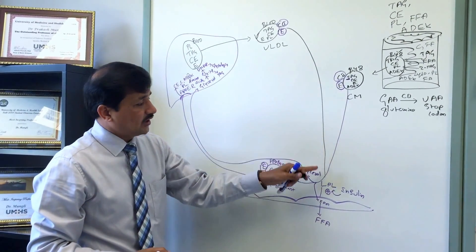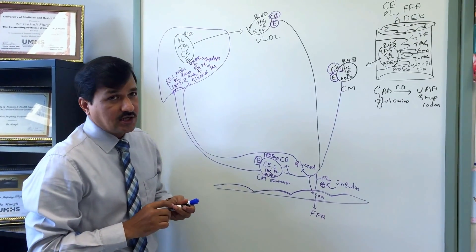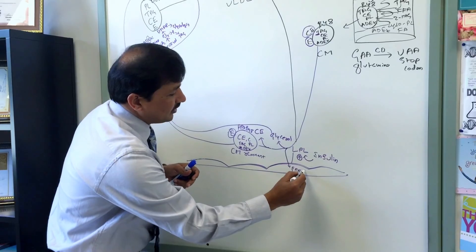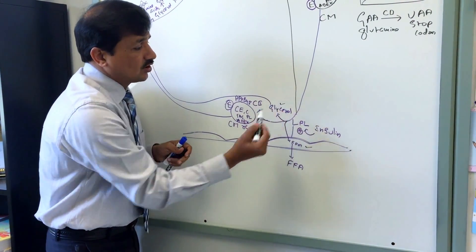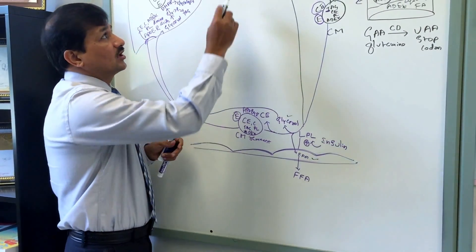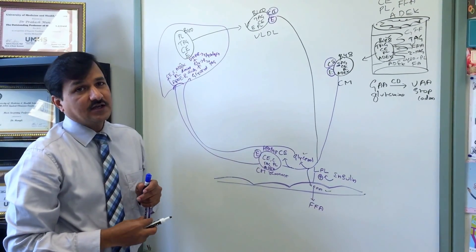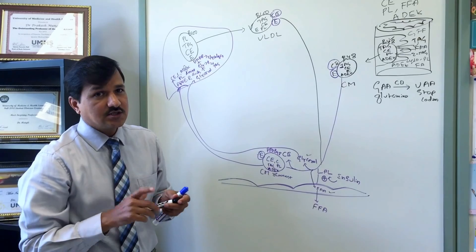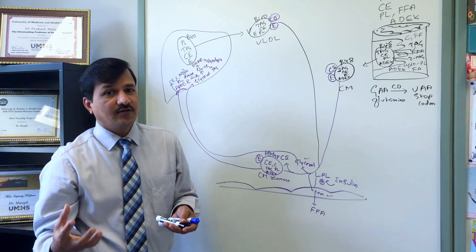The mature VLDL, as it passes through LPL — lipoprotein lipase attached to the endothelium, which was previously acting on chylomicrons — LPL now acts on VLDL. LPL degrades the triacylglycerol present in VLDL, releasing free fatty acids taken up by peripheral tissues, and also releasing glycerol.